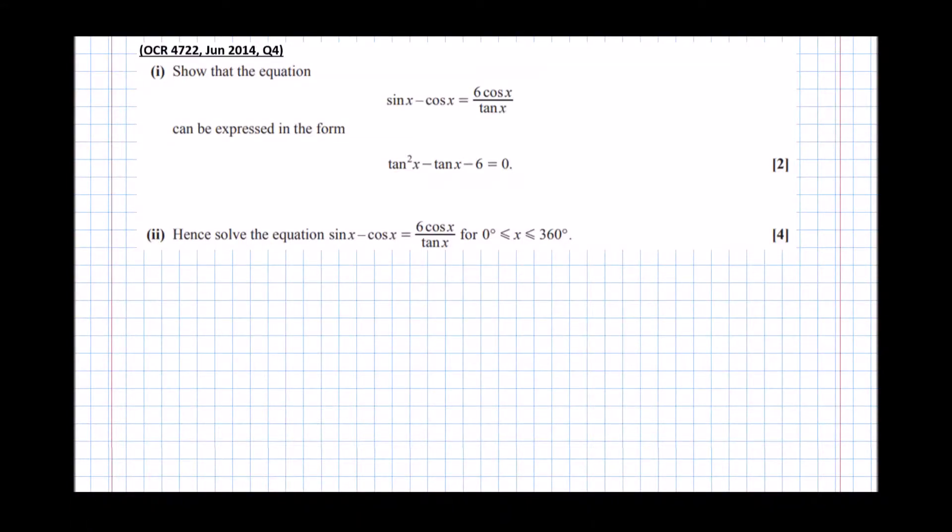In this video, we're going to have a look at solving trig equations involving trigonometric identities. In particular, the trig identities that we're expected to know are sin squared theta plus cos squared theta identical to 1, and tan theta identical to sin theta over cos theta.